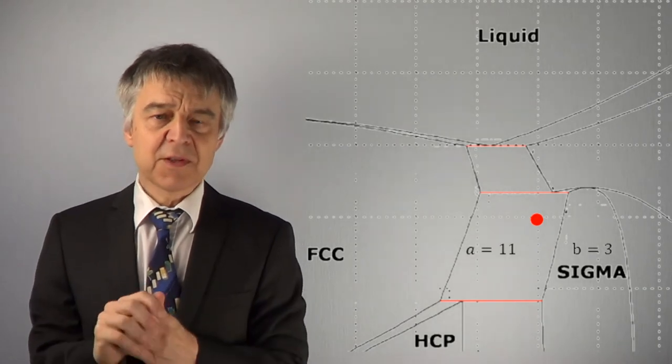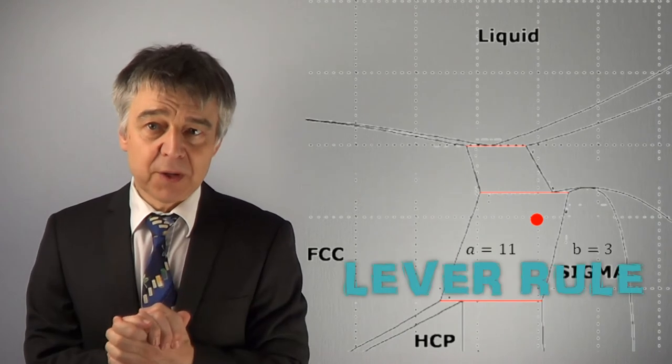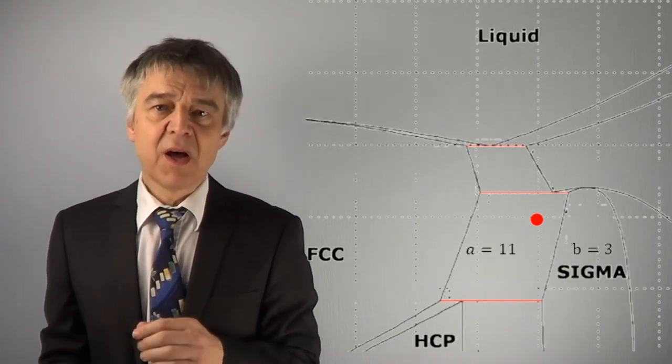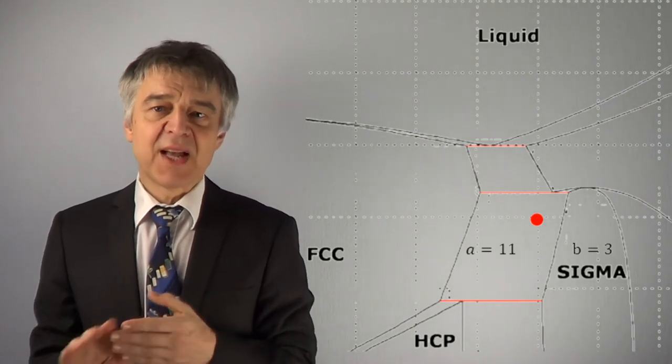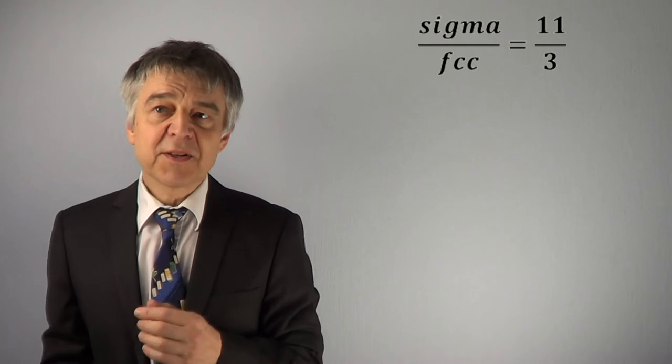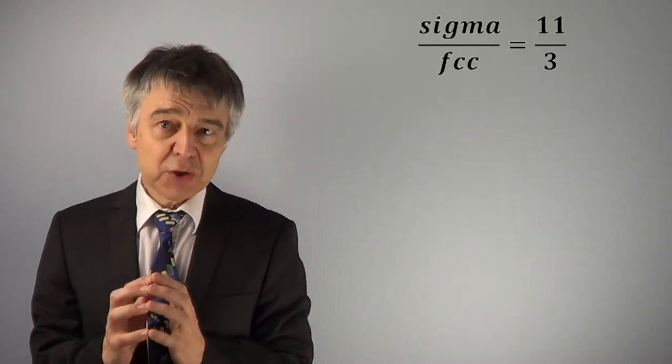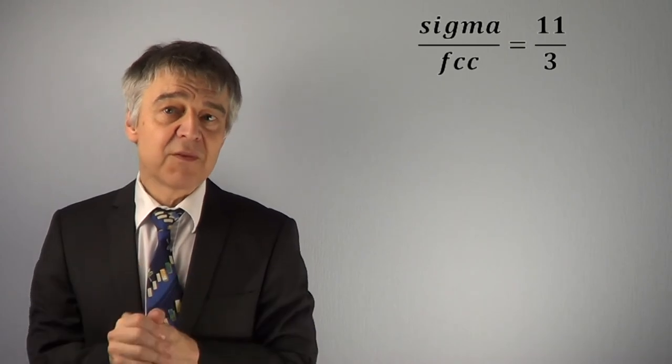The relative amounts of the phases are quantified by the lever rule. The left lever arm has a length of 11 and the right lever arm has a length of 3. So this corresponds to the mass ratio of sigma phase to FCC phase 11 over 3.